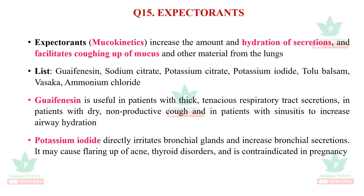Question fifteen is expectorants, also called mucokinetics. They increase the amount and hydration of secretions and facilitate coughing up of mucus from the lungs. The list includes guaifenesin, sodium citrate, potassium citrate, potassium iodide, tolu balsam, vasaka, and ammonium chloride. Guaifenesin is useful in patients with thick tenacious respiratory tract secretions, dry non-productive cough, and sinusitis to increase airway hydration. Potassium iodide directly irritates the bronchial glands and increases bronchial secretions; it may cause flaring up of acne, thyroid disorders, and is contraindicated in pregnancy.